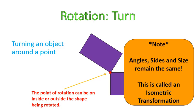So again, the angle measurements don't change. The side lengths don't change. The size remains the same. An isometric transformation.